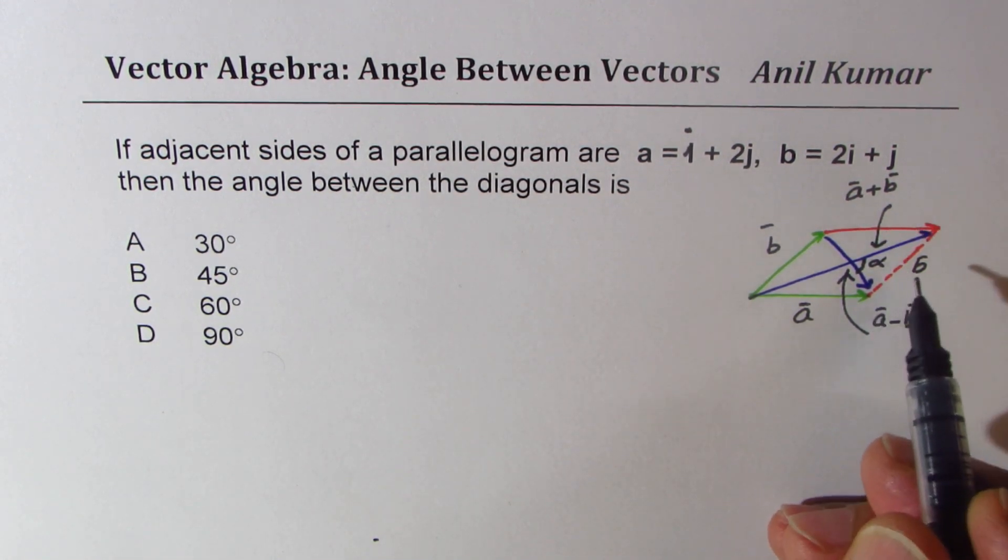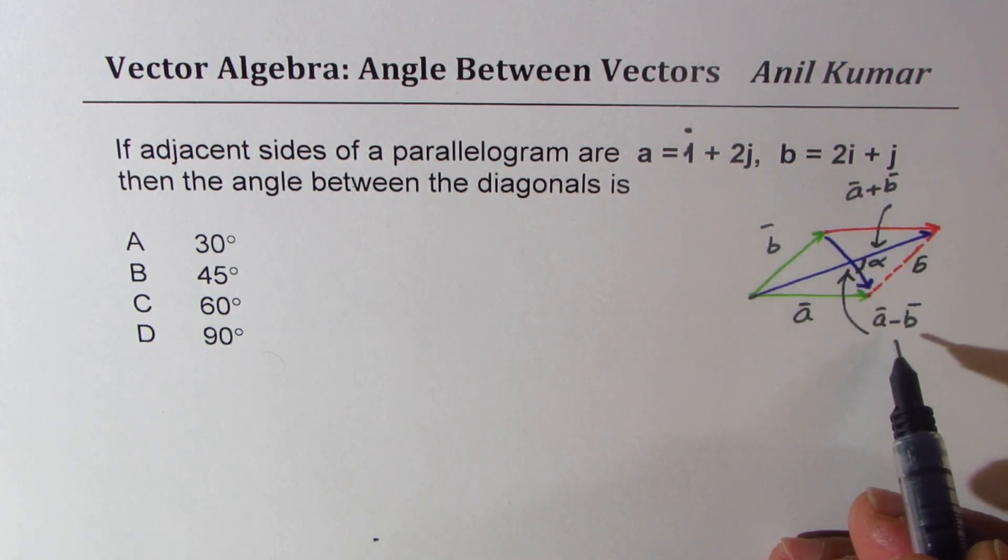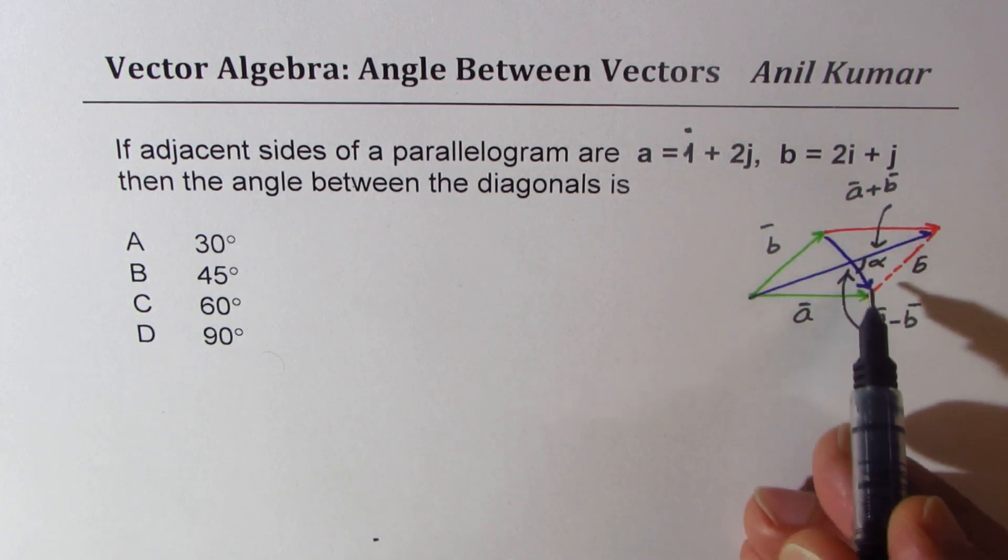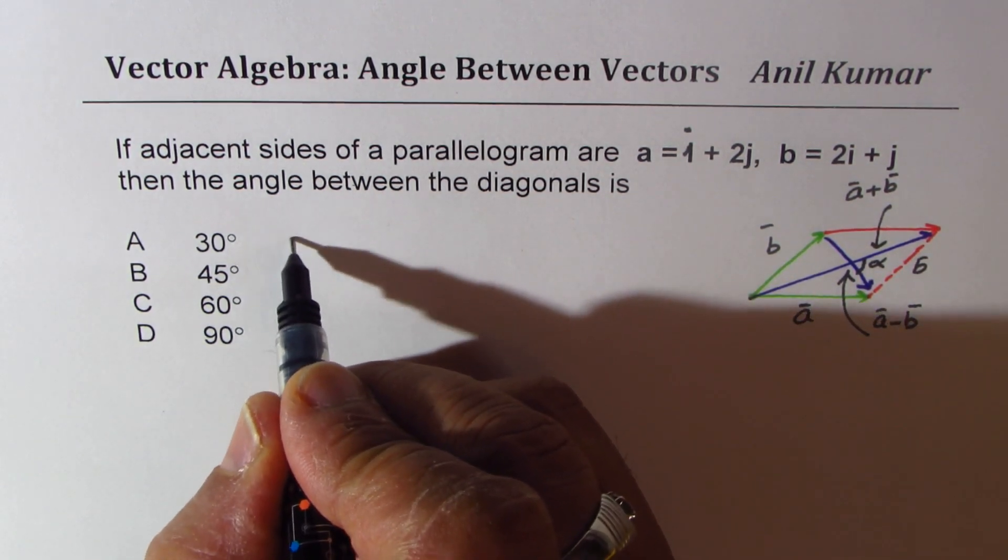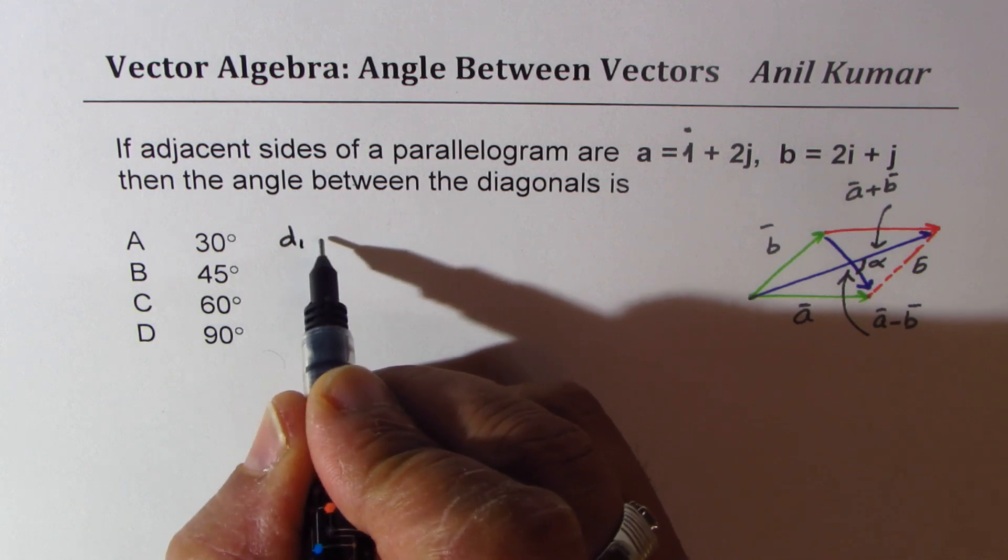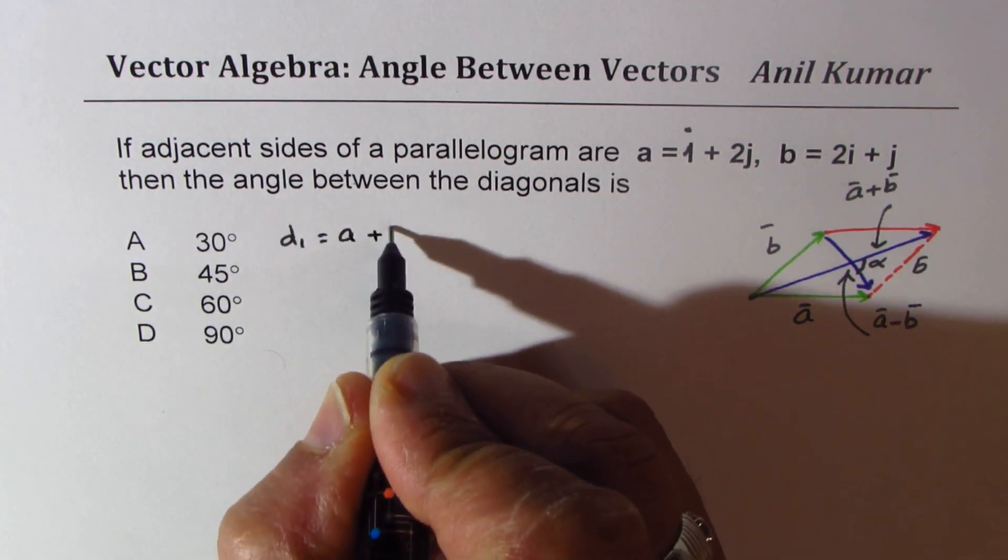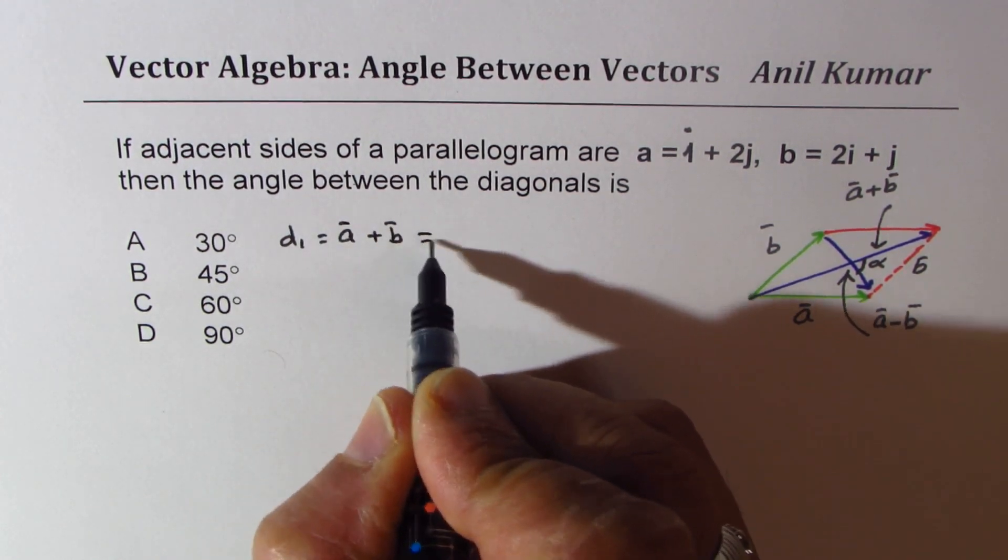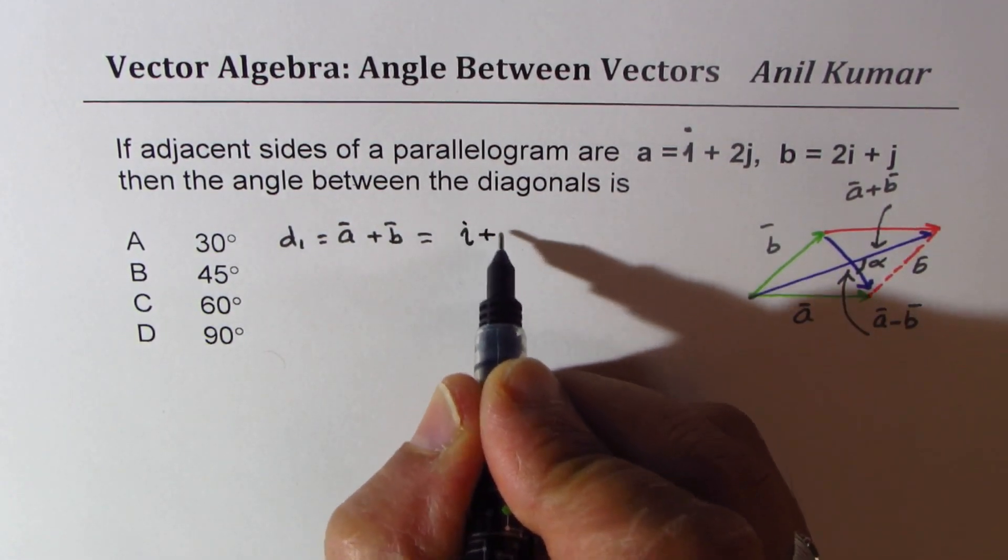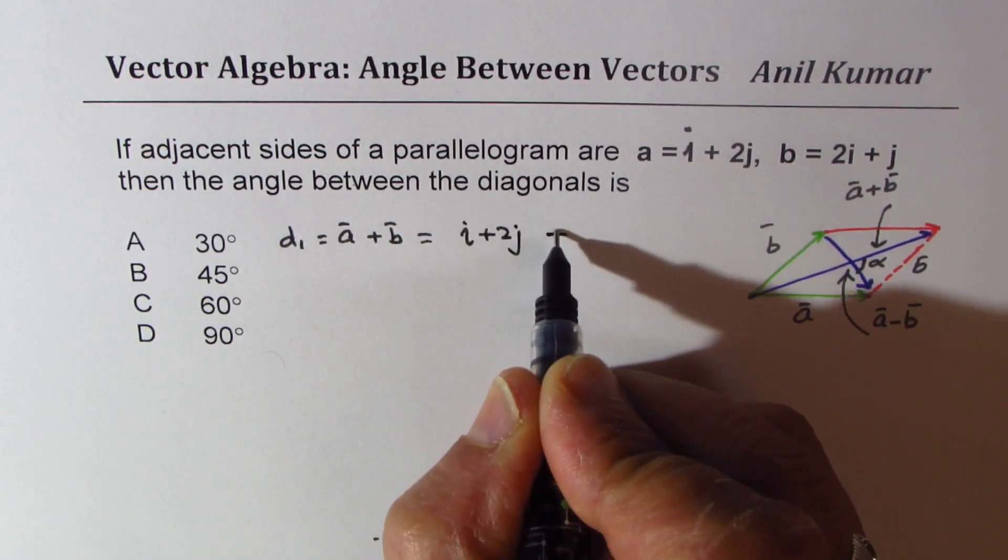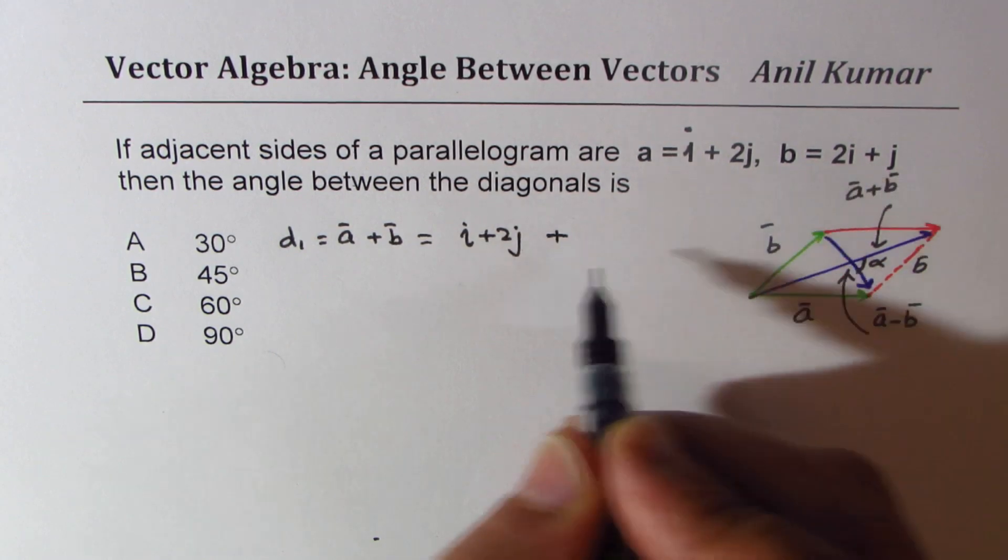So let's find what are these diagonals. Let's say diagonal one is vector a + vector b. We are given a is i + 2j. We can now add b which is 2i + j.